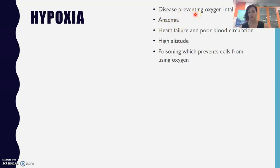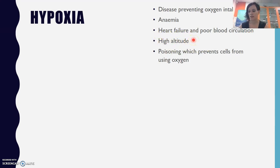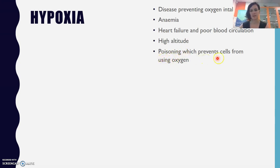Anemia means you are lower in red blood cells or hemoglobin, so you don't have that carrier protein to do the job of delivery. Heart failure and poor blood circulation also affect delivering oxygen. High altitude is different — as you go higher above sea level, the amount of oxygen available becomes much lower, and your body has to take lots more breaths to get the same amount of oxygen in, leading to short, shallow breathing and less effective oxygen use compared to sea level.